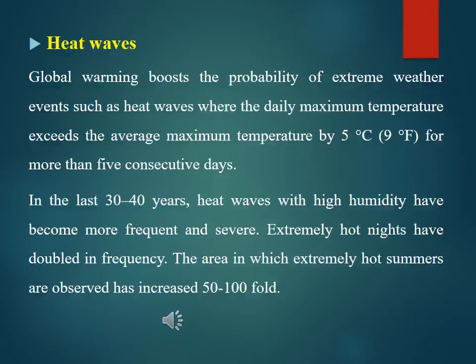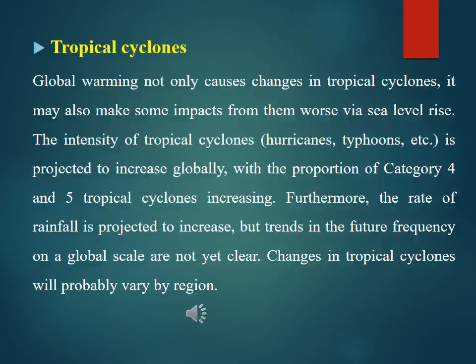Global warming not only causes changes in tropical cyclones but may also worsen some impacts via sea level rise. The intensity of tropical cyclones, such as hurricanes and typhoons, is projected to increase globally, with the proportion of Category 4 and 5 tropical cyclones increasing. The rate of rainfall is projected to increase, but trends in future frequency on a global scale are not yet clear. Changes in tropical cyclones will probably vary by region.